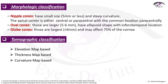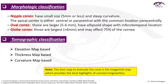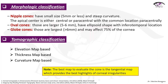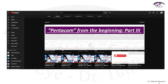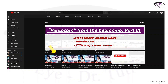Tomographic classification is based on elevation map, thickness map, and curvature map. The best map to evaluate keratoconus is the tangential map, which provides the best highlights of corneal irregularities. For a more detailed explanation about tomographic classification, please check my Pentacam from the beginning series, part 3, where I discuss ectatic corneal diseases and ECD progression criteria.